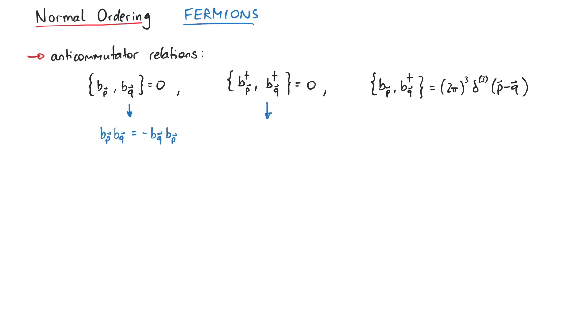Now let's discuss the normal ordering of fermionic operators. Here the creation and annihilation operators fulfill these anti-commutator relations. The first two tell us that we can always exchange two b's or two b-daggers, when we include a minus sign.